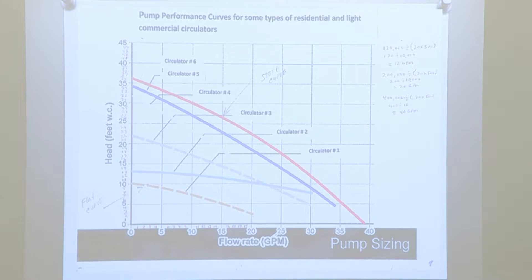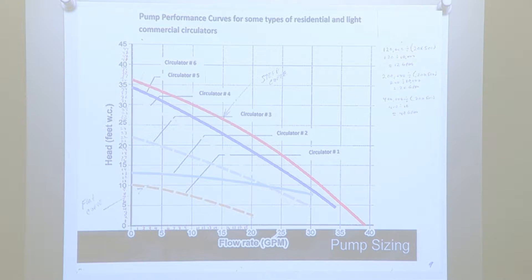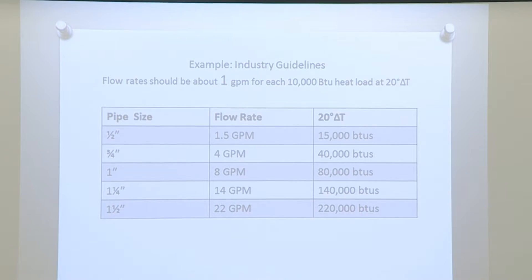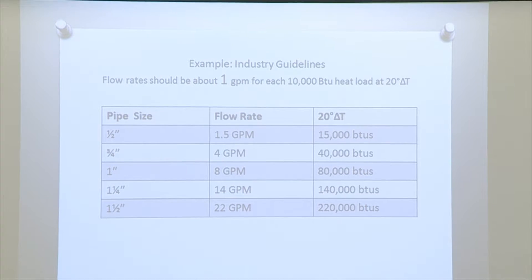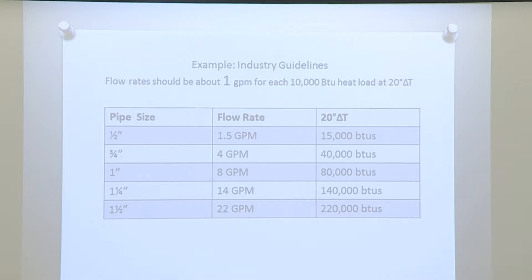Here's the pump performance curve. With a flow rate of 9 GPMs and a head of 5.4 feet, circulator number one could handle this system. Here are some industry guidelines: the flow rate should be about 1 gallon per minute for each 10,000 BTU at a 20 degree delta T. The chart gives you flow rates and pipe sizes based on 20 degree delta T, though different delta T's exist.